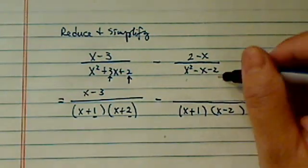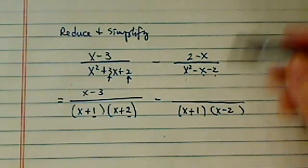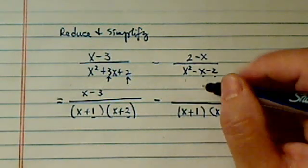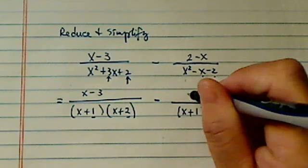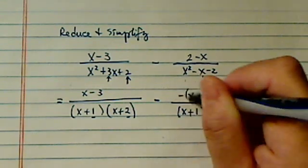When I multiply them, I get this one. When I add them, I'm going to get that one. Now this is minus 2 minus x. I'm going to pull the minus sign and make it into x minus 2 with a minus sign.